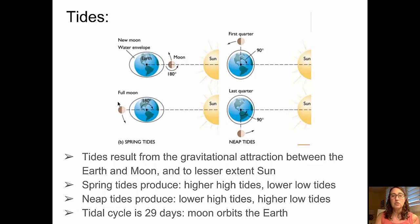A similar situation occurs with a full Moon, where the Moon is on the opposite side of the Earth. These are called spring tides. In a spring tide, we have higher high tides and lower low tides, and that produces a greater difference between the high tide high and the low tide low. In the diagram on the right side, we see an example of the first quarter and the third quarter, which shows that the tidal bulge is not as great when the alignment between the Sun, Earth, and Moon is at 90 degrees. That produces what we call a neap tide.